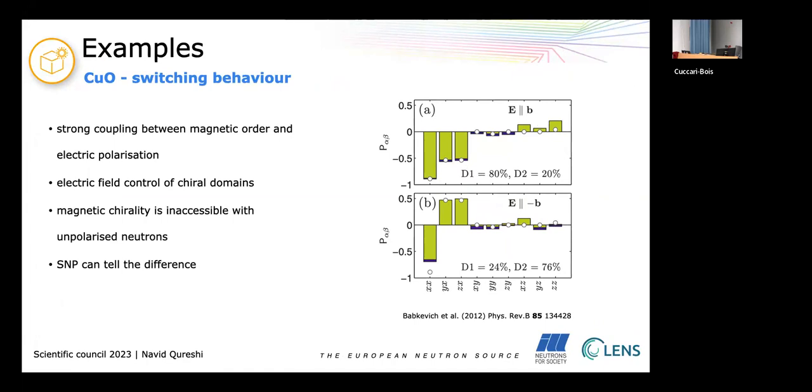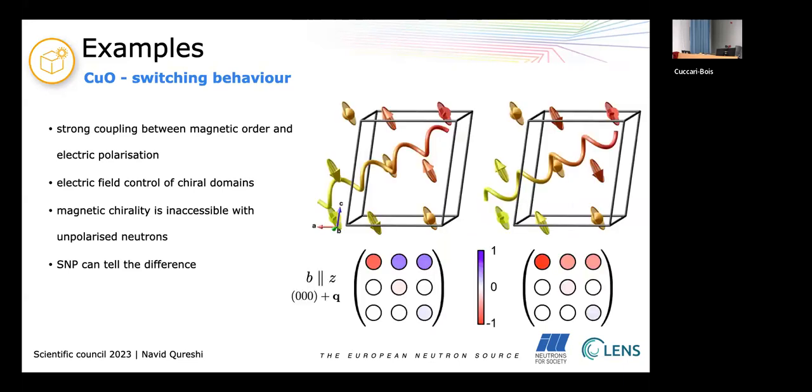And this has been nicely shown in this work here where we have two different electric field directions along the positive and the negative b direction. And you see that those two matrix elements of the polarization matrix have a different sign. Those are these two elements which we call the chiral terms and that gives you the idea or the information about if you have a left-handed spiral or a right-handed spiral. So SNP can tell the difference between those two states.